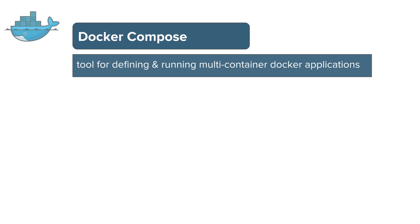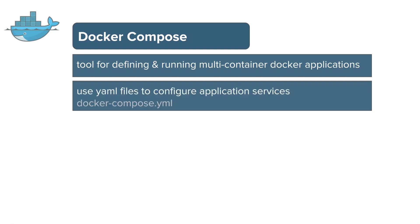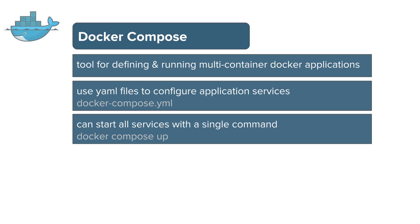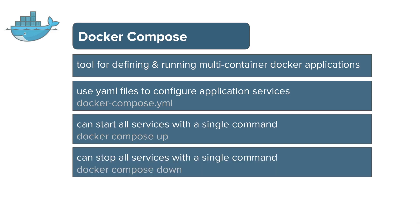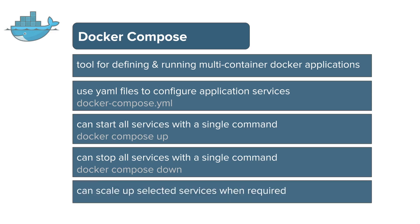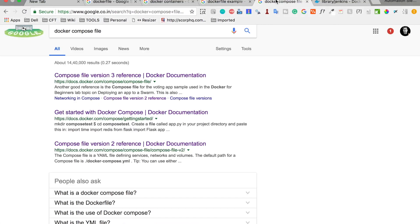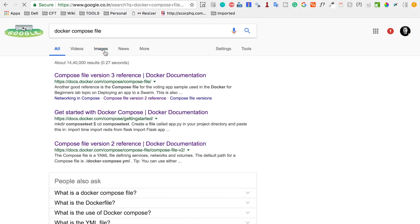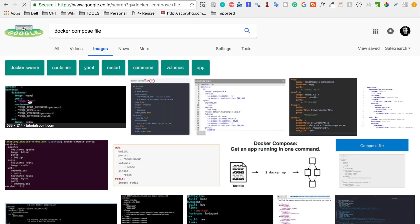Docker Compose is a tool for defining and running multi-container Docker applications. In real world, we do not have single-container applications. Take a web application: we will have a container running the front-end server, a container running the back-end server or database, and other dependencies. Docker Compose uses a YAML file called 'docker-compose.yml' for configuration.